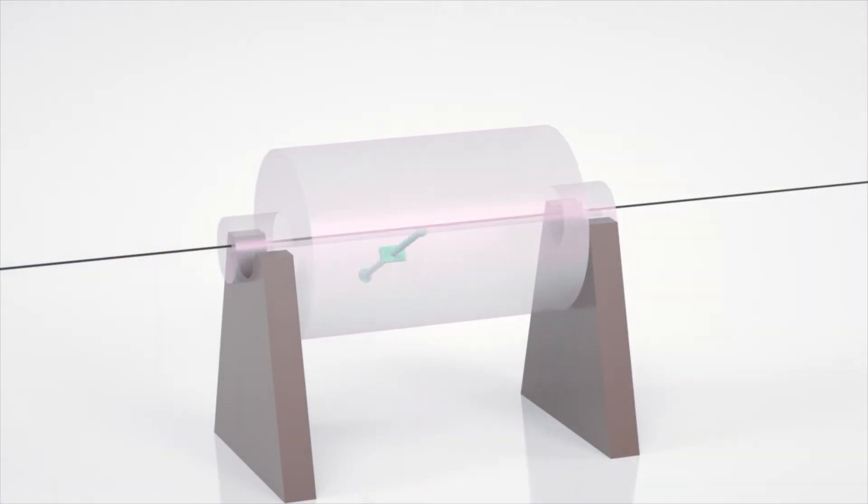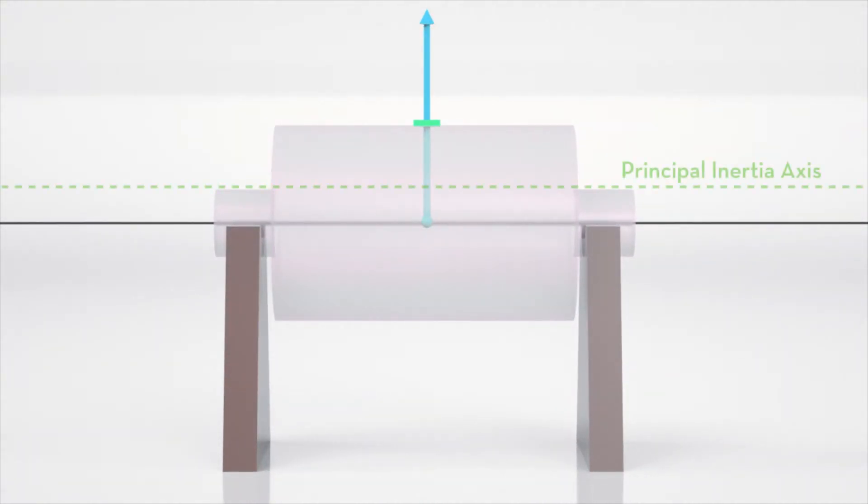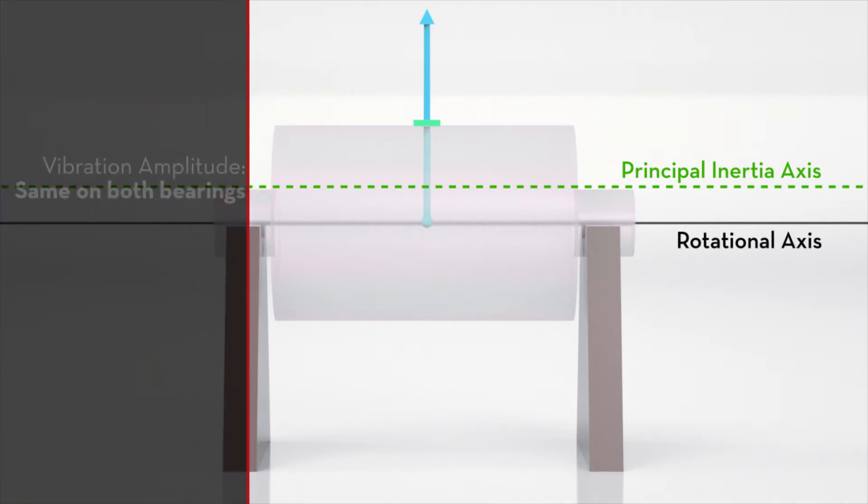Static unbalance occurs when the imbalance is at the center of gravity. The principal inertia axis is displaced from the rotational axis. The two axes are parallel. The vibration amplitude will be the same on both bearings. The phase angles will be the same.